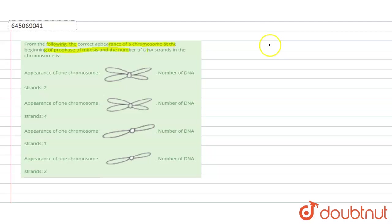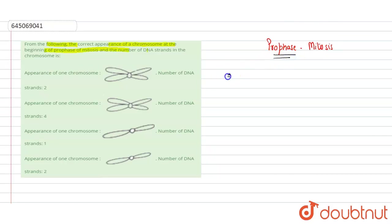If we talk about prophase specifically, they have mentioned mitosis because in mitosis and meiosis, prophase is different. Mitosis is a simple equational division, so its prophase is different. Prophase is characterized by condensation of chromosomes.